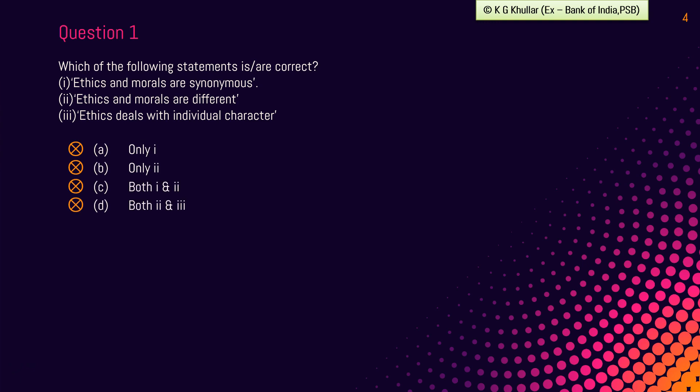Ethics deals with individual character, which is a personal attribute. Ethics is the response of an individual to a specific situation — for example, whether in a given situation it is ethical to state the truth. While morals deal with customs set by groups or attributes such as religion. Morals are general principles — for example, you should speak truth. So the correct option is option D: statements second and third are correct.